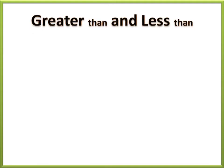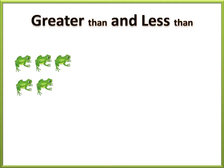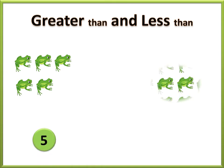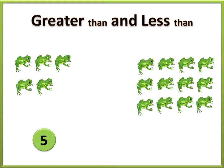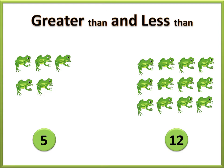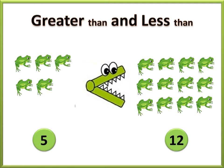Let us count the number of frogs. Five. Five. Twelve. Five is less than twelve. So, we use the less than sign.